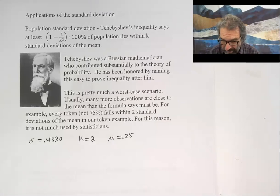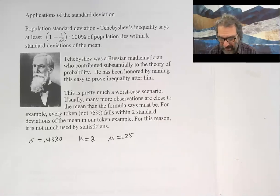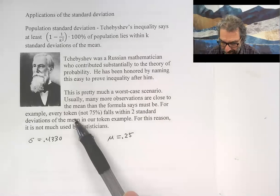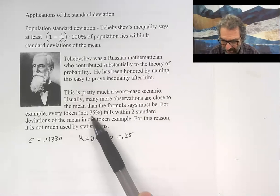This inequality is not too useful in applied situations because it's pretty much a worst-case scenario. Usually, many more observations are close to the mean than the formula says. For example, in our token example, nearly every token, not 75 percent.